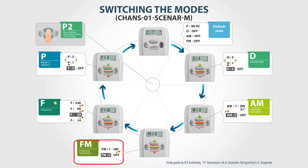The next parameter is the frequency. The default frequency is always 60 Hz. We can increase or decrease the frequency by pressing the plus or minus button. Press the plus button one time to set the higher frequency of 90 Hz, and 2 times to set the frequency of 340 Hz, or press the minus button to set the lower frequency of 14 Hz.